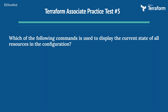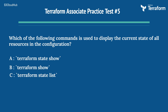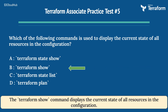The fifth question: which of the following commands is used to display the current state of all resources in the configuration? Options are: A) Terraform State Show, B) Terraform Show, C) Terraform State List, D) Terraform Plan. The right answer is Option B, Terraform Show. The Terraform Show command displays the current state of all resources in the configuration.